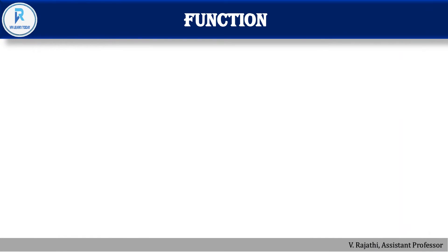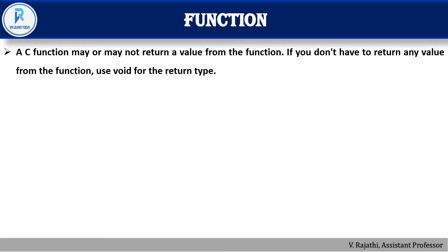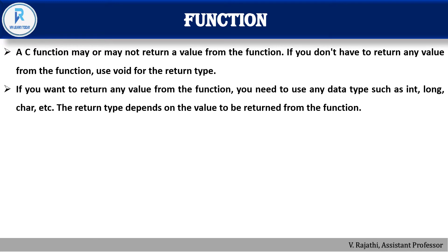First we have to know what a function is. A C function may or may not return a value. If you don't need to return any value from the function, use void for the return type. Every C program runs from the main function. If the main function doesn't return any value, instead of using int main, float main, or double main, we can use void main. If you want to return a value, use any data type such as int, long, char, etc. The return type depends on the value to be returned.